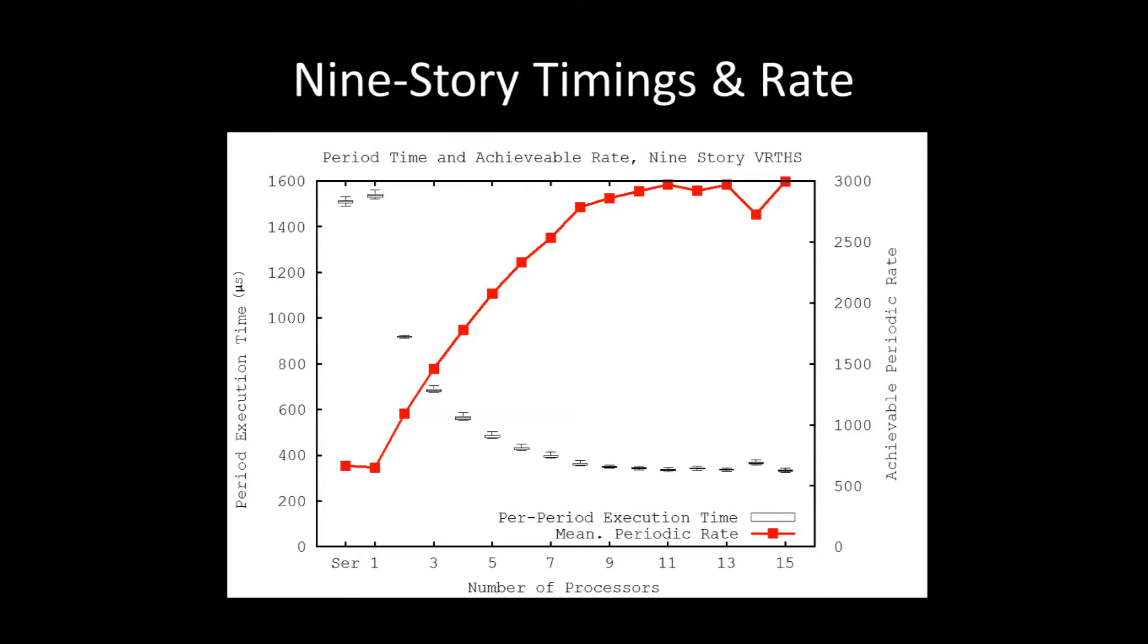This graph shows the computational performance of the same nine-story simulation from before. Along the bottom of the graph, you can see that we vary the number of computer processors participating in the parallel computation. As we increase the number of processors, the periodic rate increases, as seen with the red line on the right-hand axis. One interesting result is that the overall variability of timings did not increase as a result of parallel computation, which means that our parallel runtime is suitable for use in real-time systems.